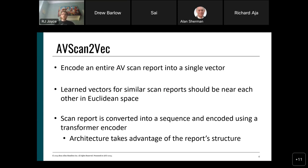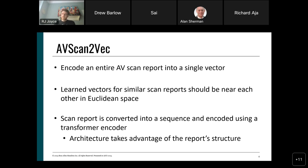The encoding is done using a transformer. The transformer is considered the leading architecture for many natural language processing tasks — the T in GPT stands for transformer. It takes a sequence of input tokens and handles powerful relationships between those tokens. We take the antivirus scan data, apply a transformer encoder to it, and aggregate the results to get a single vector. There are several preprocessing steps required, which I'll cover in the following slides.